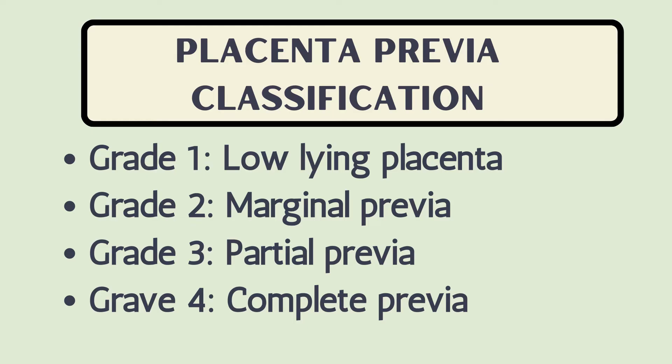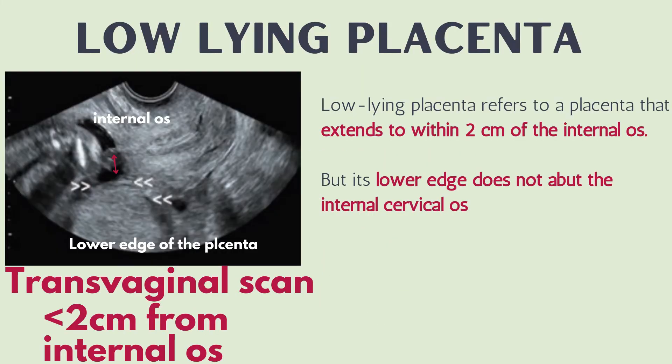Placenta previa is divided into 4 grades: Grade 1, low-lying placenta; Grade 2, marginal previa; Grade 3, partial previa; and Grade 4, complete previa.